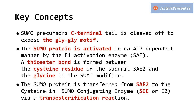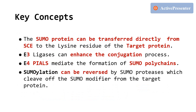Here are some of the key points in the sumoylation process. The SUMO precursor C-terminal tail is cleaved off to expose the double glycine motif. The SUMO protein is activated in an ATP-dependent process by the E1 activation enzyme, and a thioester bond is formed between the cysteine residue of the catalytic subunit of the E1 and the glycine in SUMO. The SUMO protein is transferred from the E1 to the cysteine residue of the E2 SUMO conjugating enzyme via a transesterification reaction. The SUMO protein can be transferred directly from the E2 to the lysine residue of the target protein. E3 ligases can enhance the conjugation process. E4 ligases mediate the formation of SUMO polychains in plants. Sumoylation can be reversed by SUMO proteases, which cleave off the SUMO modifier from the target protein.